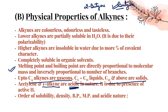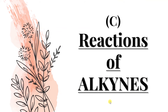In terms of properties like solubility, density, melting point, boiling point, and acidic nature: comparing alkynes, alkenes, and alkanes — alkynes will have more of these characters than alkenes, and alkenes more than alkanes.